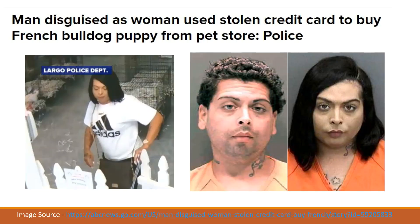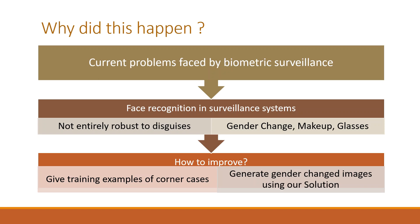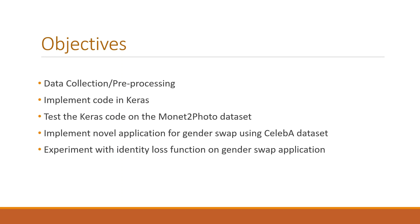Recently there was a news article on a crime committed which involved facial disguise with gender change. Our target is to improve the performance of biometric surveillance systems, which are not entirely robust to disguises, by giving them examples of corner cases.